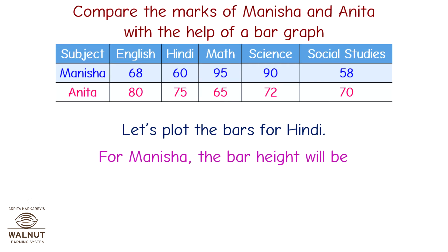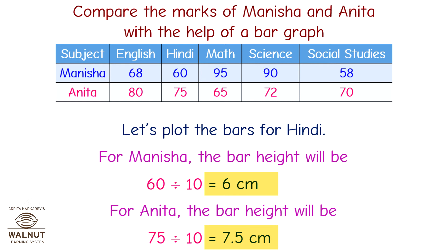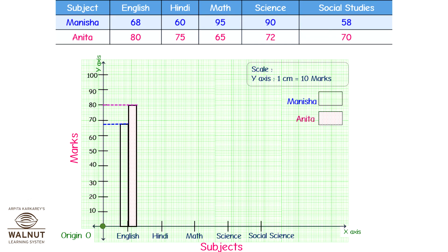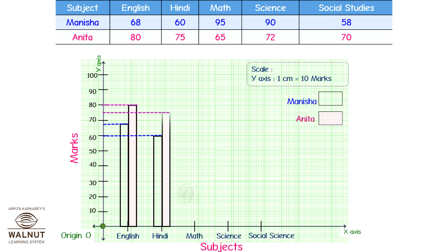Let's plot the bars for Hindi. For Manisha, the bar height will be 60 divided by 10, equal to 6 centimeters. For Anita, the bar height will be 75 divided by 10, equal to 7.5 centimeters. We draw Manisha first — 6 centimeters with the same bar width — then draw and leave it. Then for Anita, 7.5 centimeters with the same bar width, filled with dots. So our second entry is done.